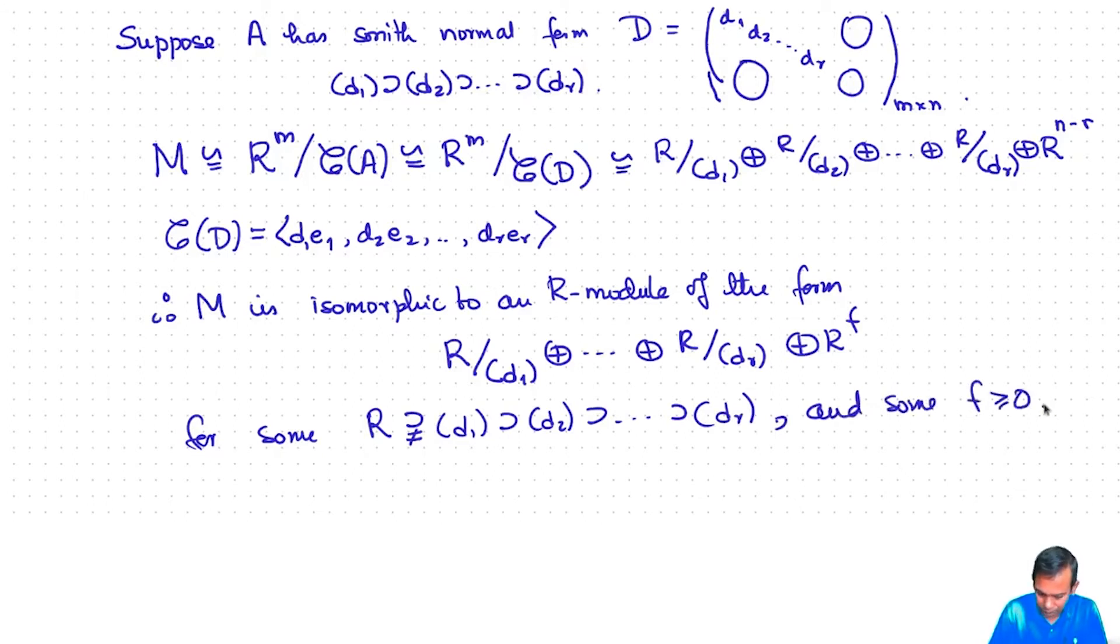What we see is that every finitely generated R-module is a direct sum of what are called cyclic R-modules, R-modules of the form R mod di for some element di of R. Moreover, these elements d1, d2, dr can be chosen in such a way that the ideal generated by d1 contains the ideal generated by d2, in turn contains the ideal generated by d3 and so on. And then there is again a free part, this R to the power f.